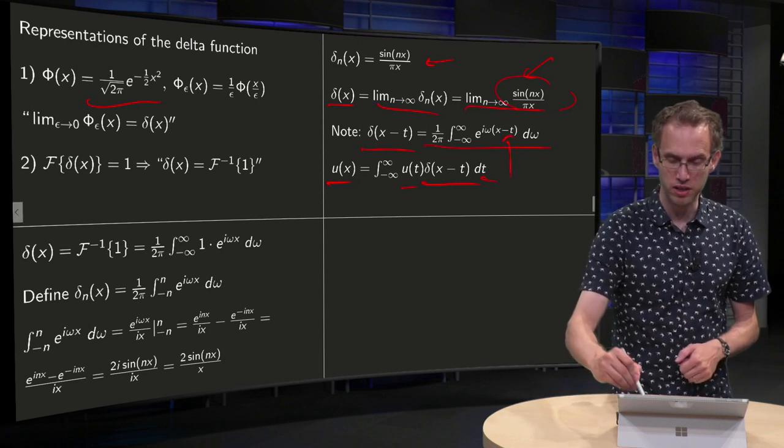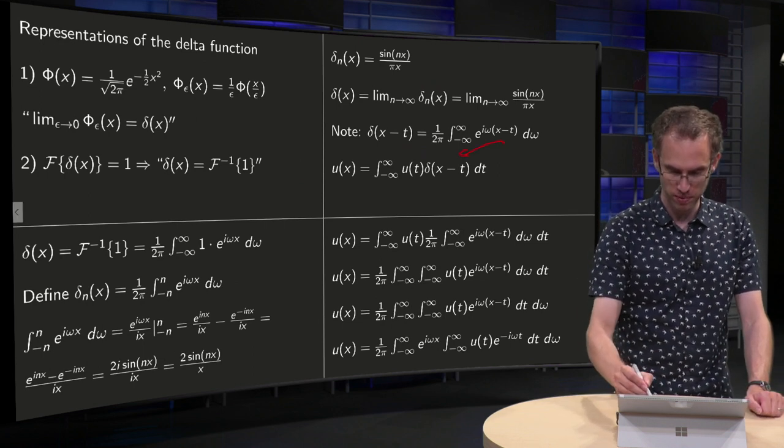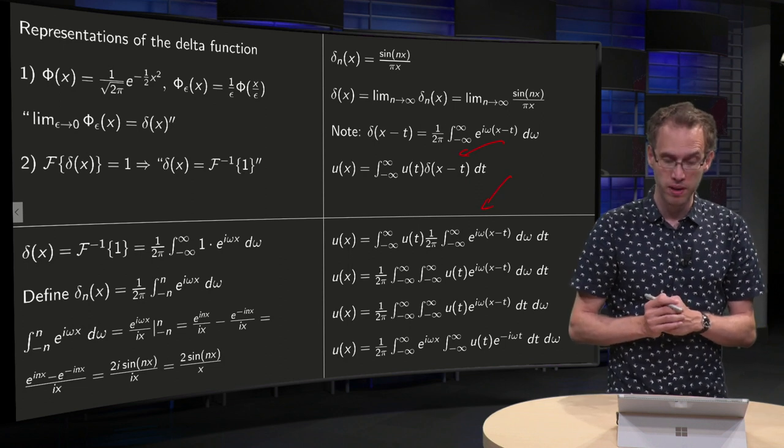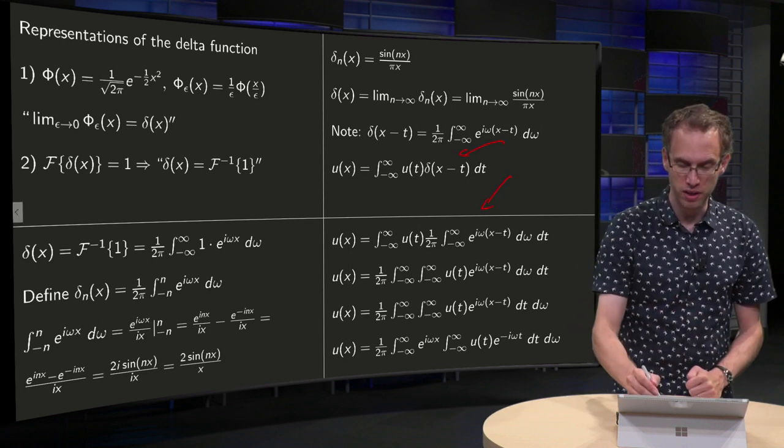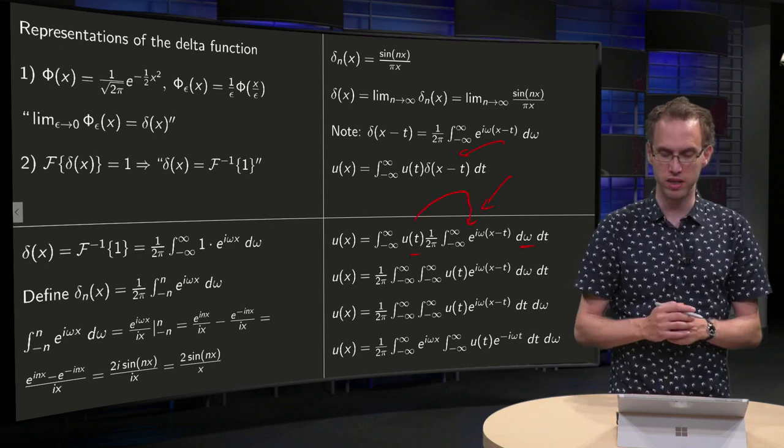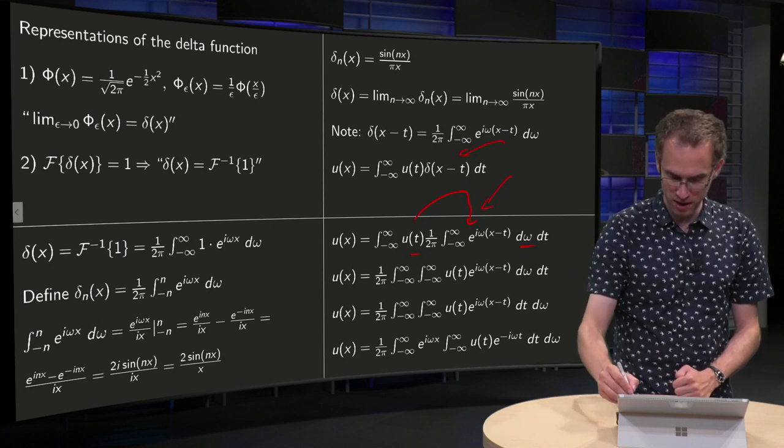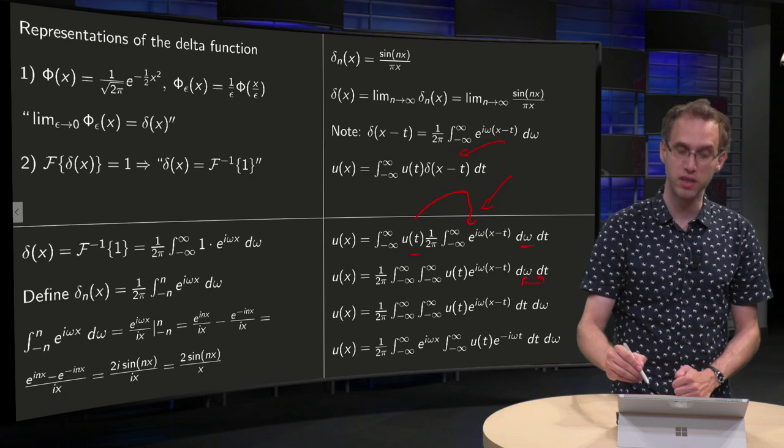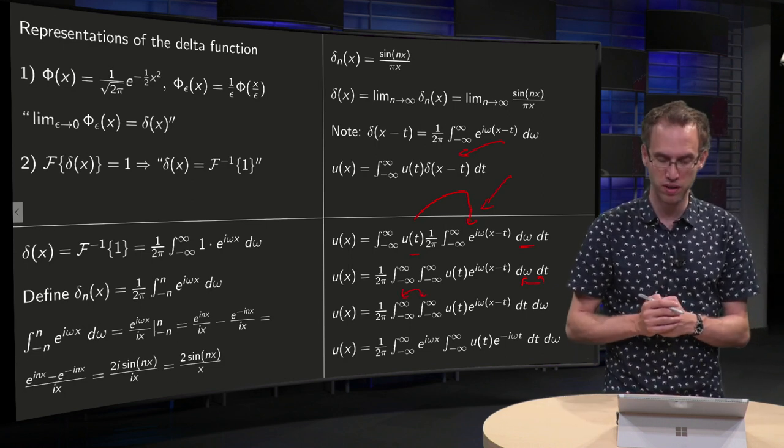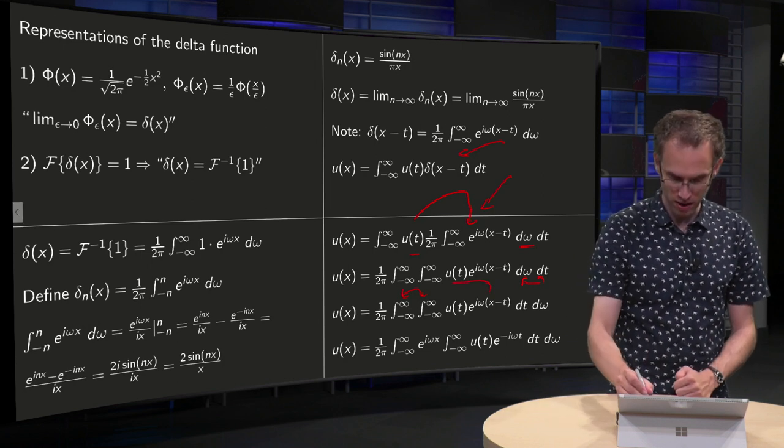And what happens now, if you plug in this representation of the delta function, so we plug this representation in, then we are over here, then the u(t) does not depend on ω, so we can put it in over here, then we are on the second line, then we use Fubini, we interchange the order of integration, it doesn't matter here of course, the boundary is still minus infinity to infinity.